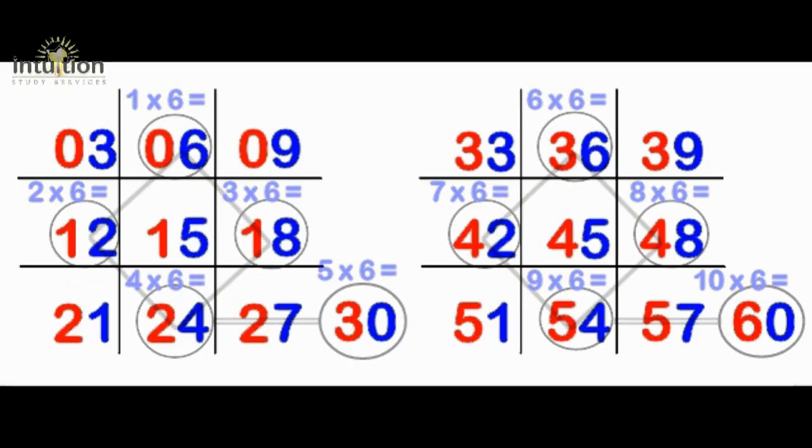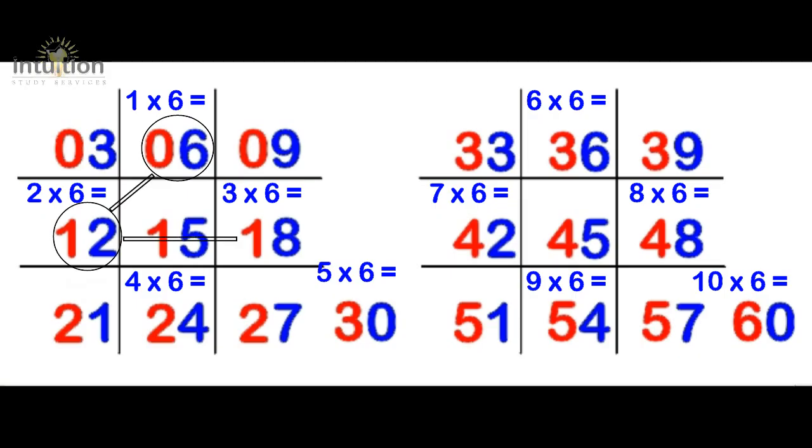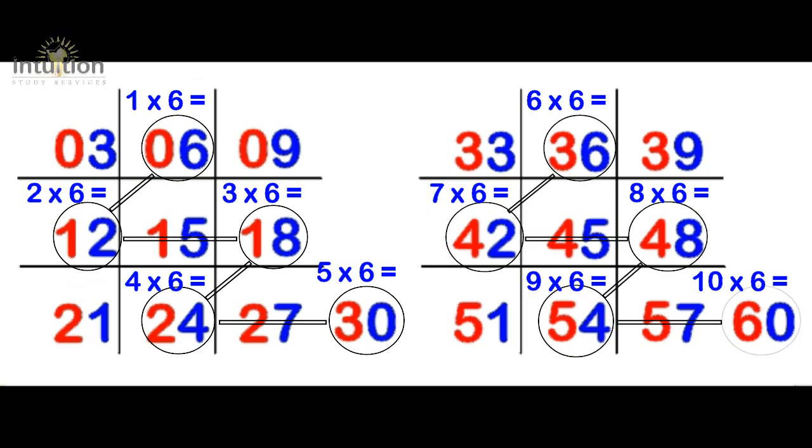You can also do a zigzag in each grid starting with the number 6. So we go from 6, 12, 18, 24 and 30. And we do the same as well with the other grid. So we do 36, 42, 48, 54 and 60. And that's the alternative if you don't want to draw diamonds, you can do like a zigzag pattern. You'll still get the same results.